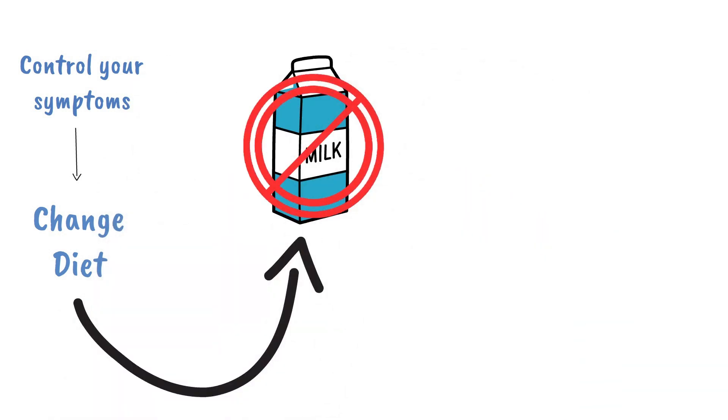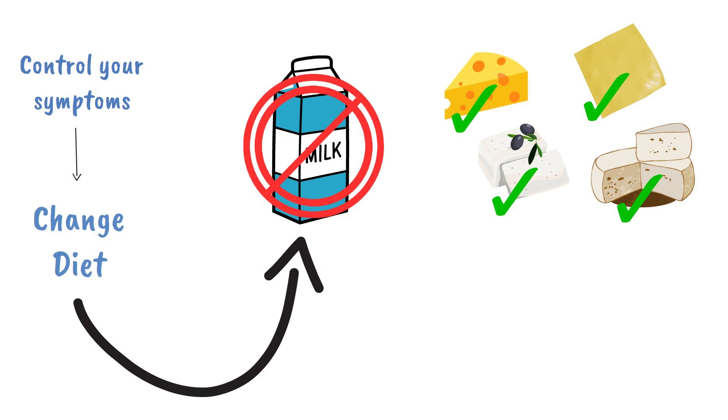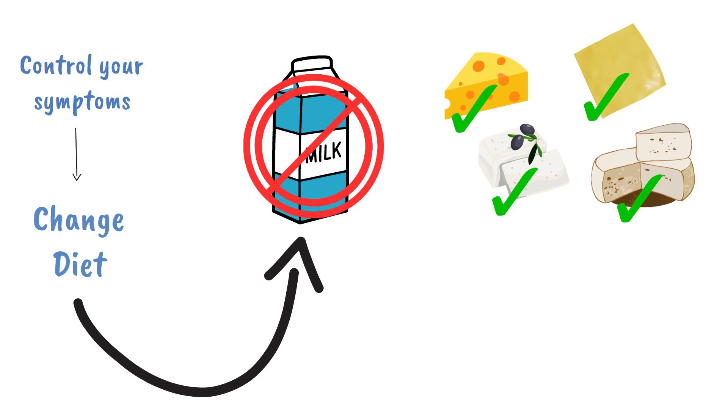But you might find that you can have some types of dairy. For example, you may learn that some cheeses, like Swiss, cheddar, feta, or goat, don't bother you, while others trigger symptoms. Or you may be able to have one glass of milk, but no more.